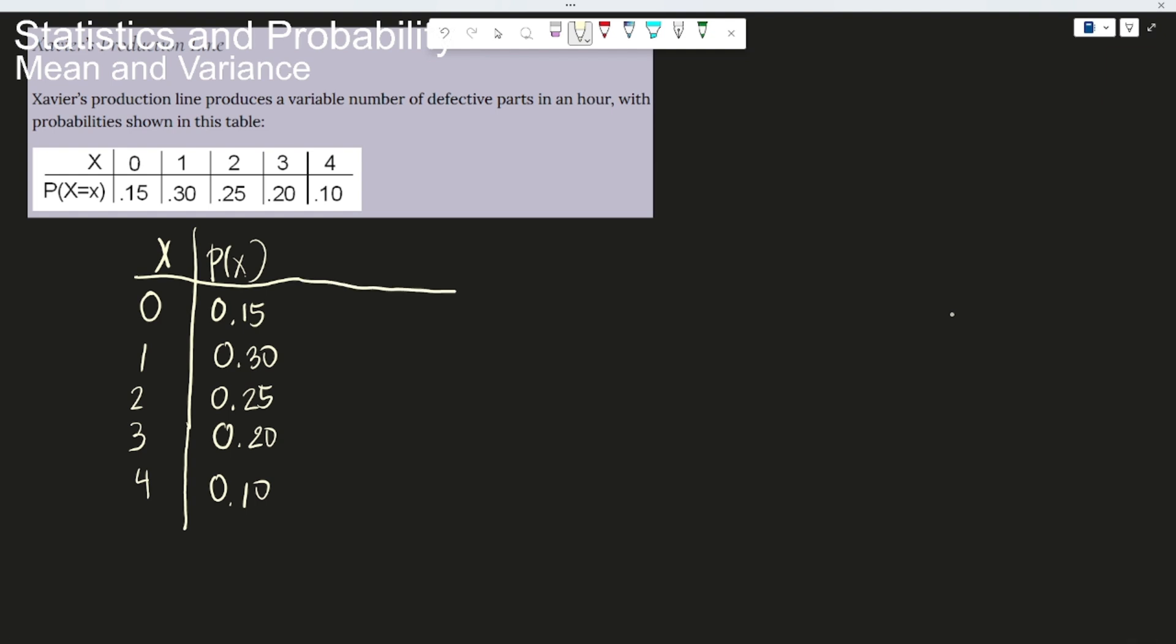And for us to get the mean of this, you have this formula, which is the mu or the expected value is equal to the x times the p of x. So we add another column for this, so that's x times p of x. So let's multiply. This x with this p of x, okay?